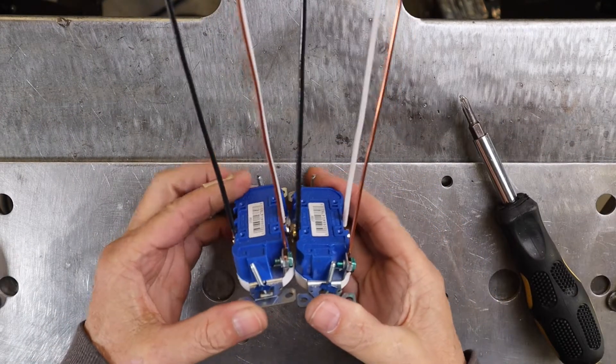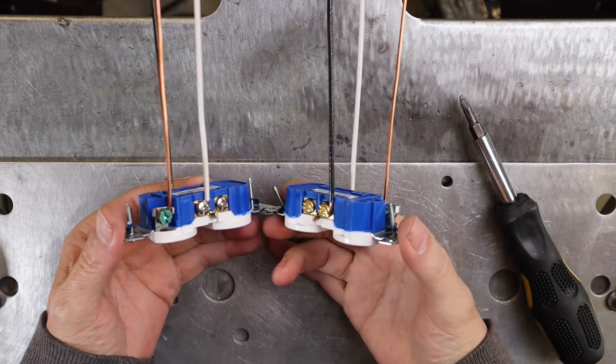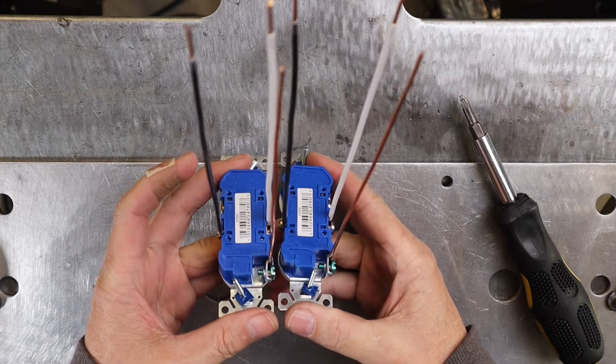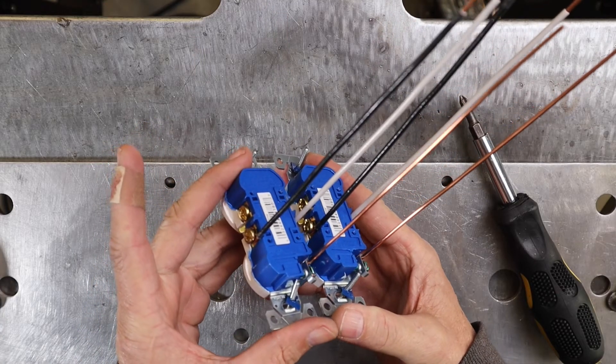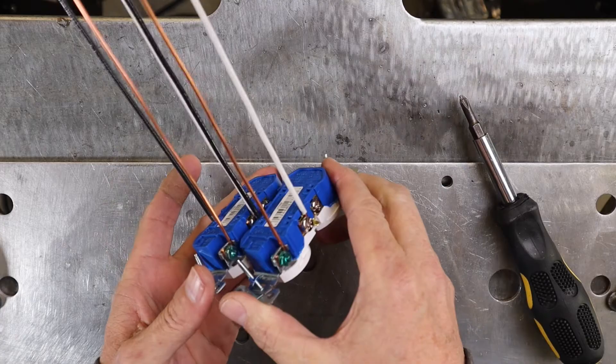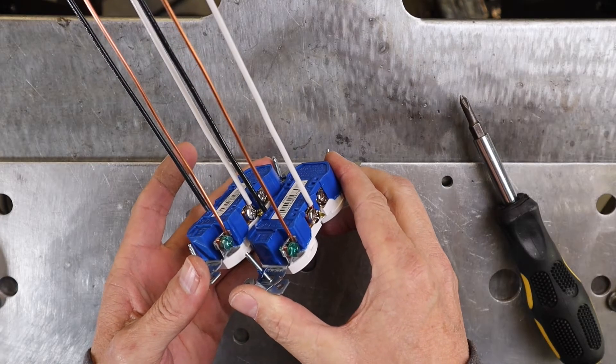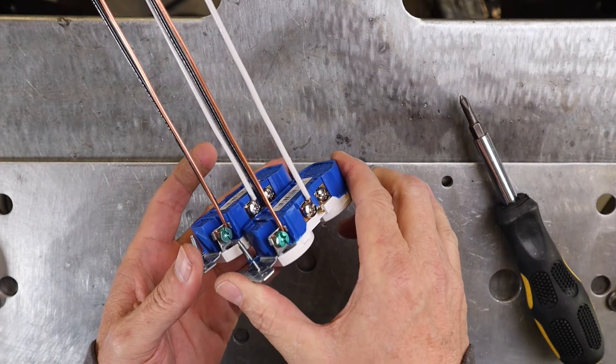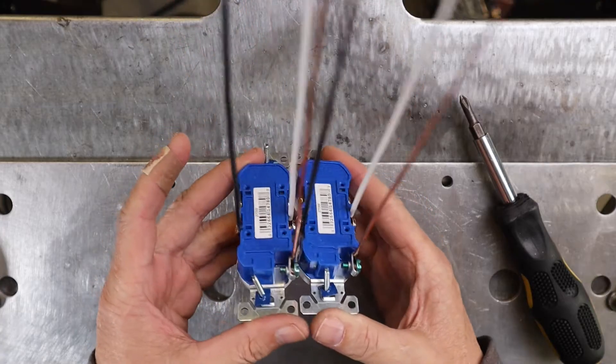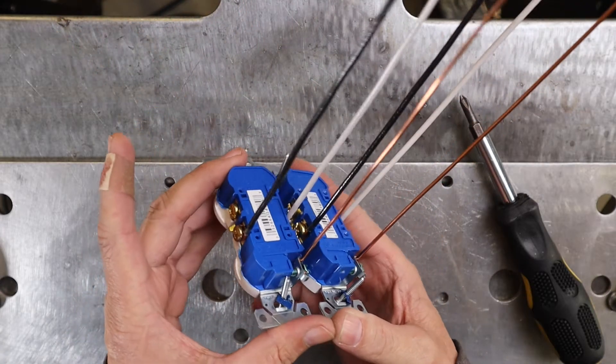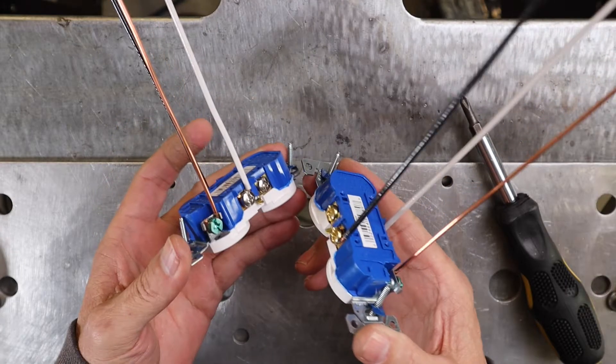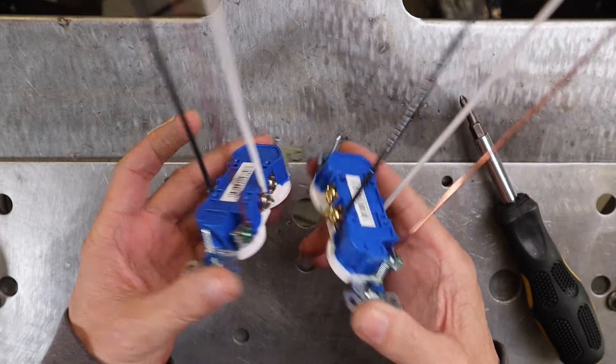Once you get those completed, they'll look like this. And I like to just hold them up side by side and just kind of look at the brass, make sure those are all black. Look at the silver, make sure those are all the white neutrals. And then of course the bare copper on the grounds. Just make sure they're uniform and you've got them all correctly. And unused terminal screws are screwed all the way in.